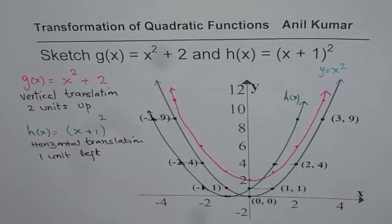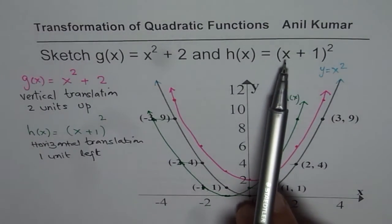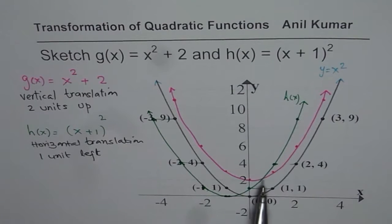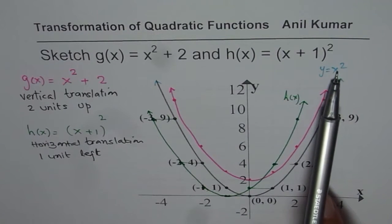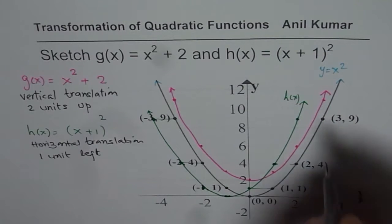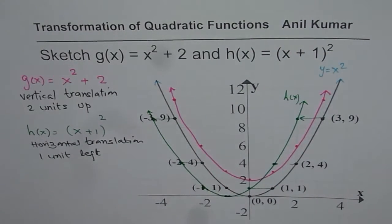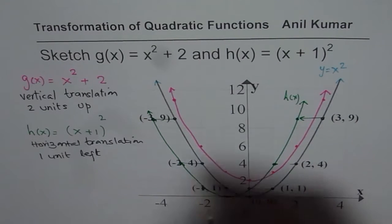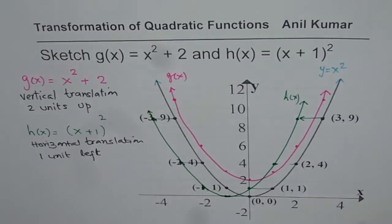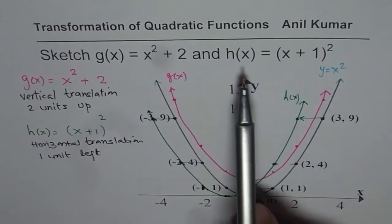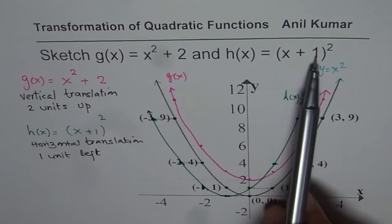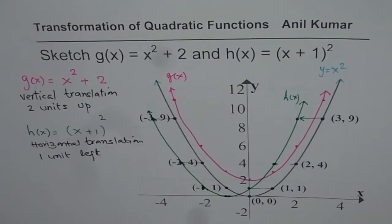That is how you can easily sketch a translated function. In this case, h of x has been translated 1 unit towards the left. Sketch your base function x squared, take the key points, and move them each 1 unit left to get the new transformed function. For g of x we translated each point 2 units up to get x squared plus 2, and for h of x we translated each point 1 unit left to get (x + 1) whole squared.